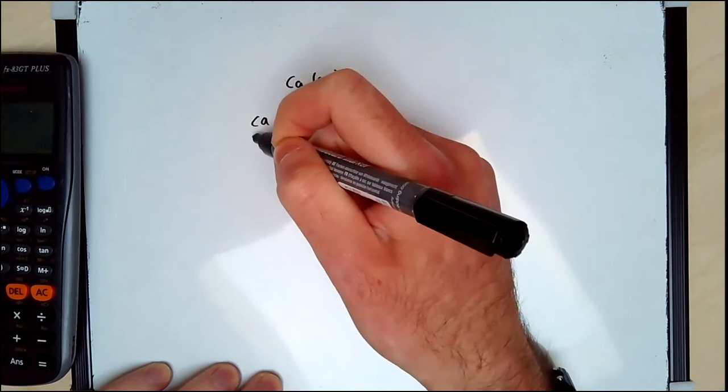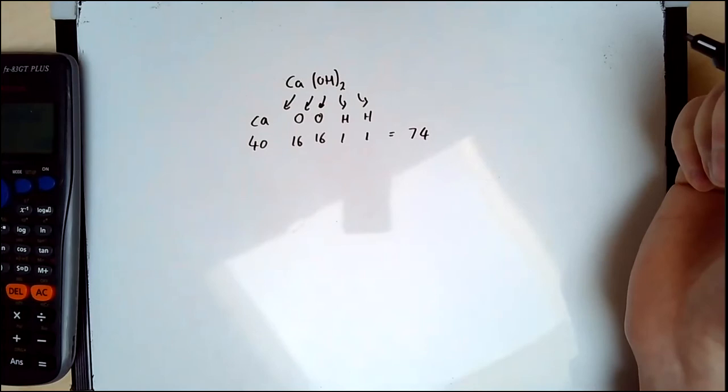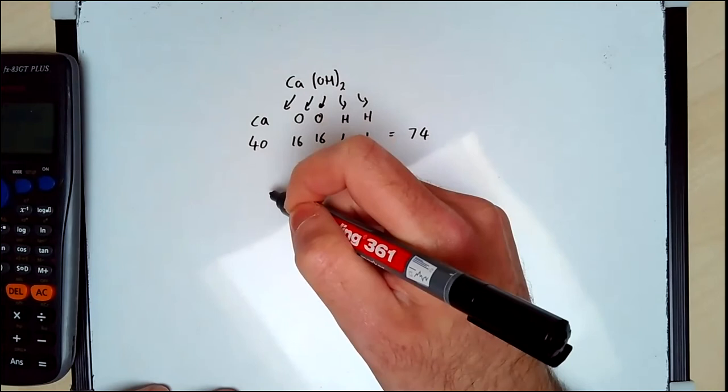My calcium is 40, 16, 16, 1, and 1. And that should give me 74.